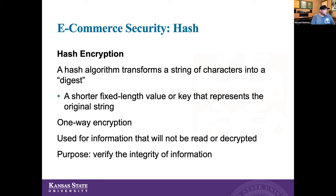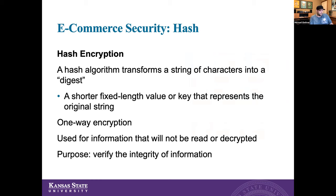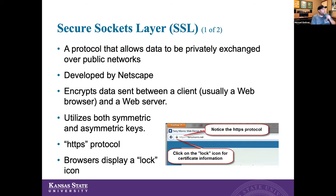Hash encryption uses a hash algorithm to transform a string of characters into what we call a digest - a shorter fixed-length value or key that represents the original string. This type of encryption is one-way, so it's just a one-way encryption. It's really used for information that's not intended to be read or decrypted - it's just to verify the integrity of the information and make sure that the data hasn't been altered in any way.